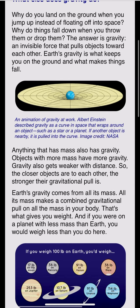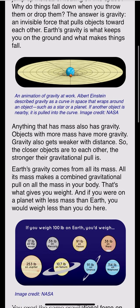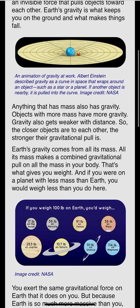Anything that has mass also has gravity. Objects with more mass have more gravity. Gravity gets weaker with distance, so the closer objects are to each other, the stronger the gravitational pull is.